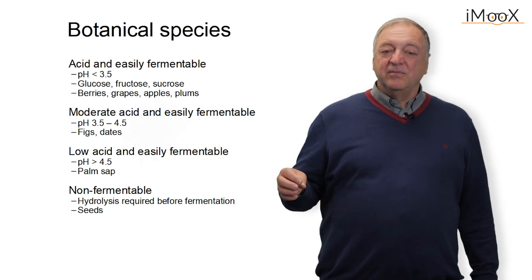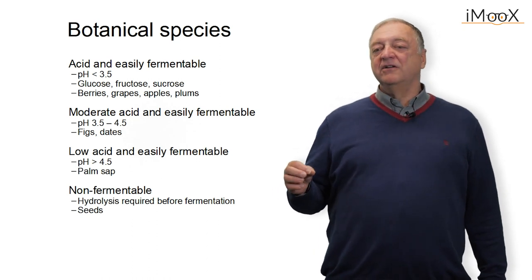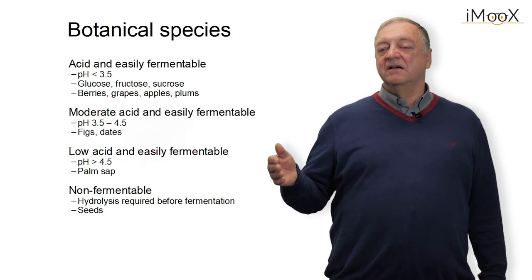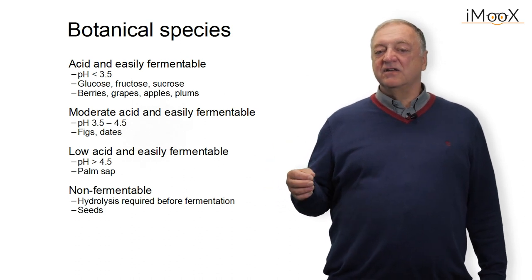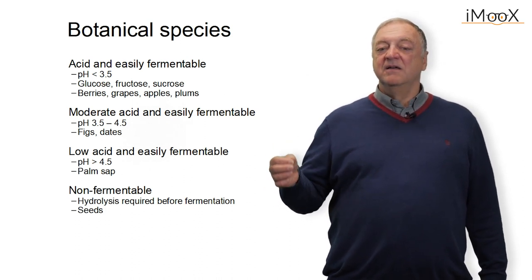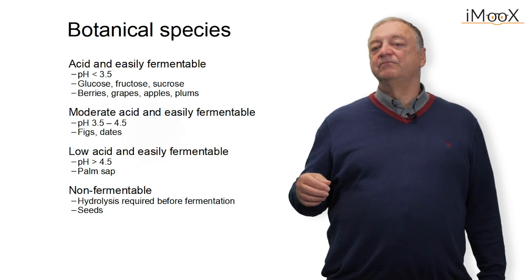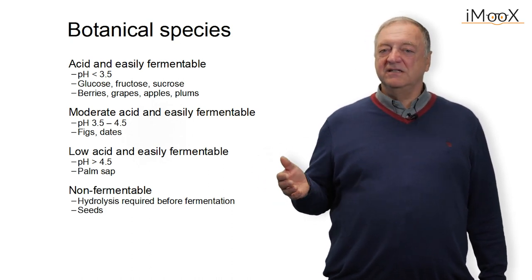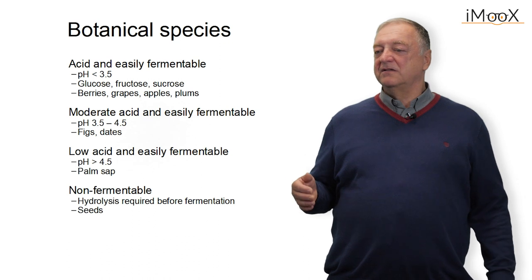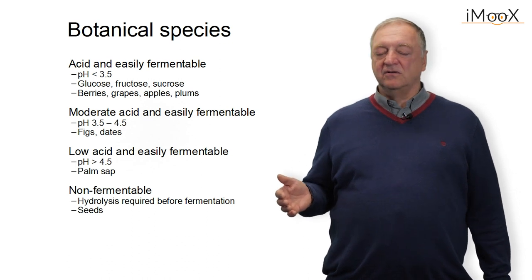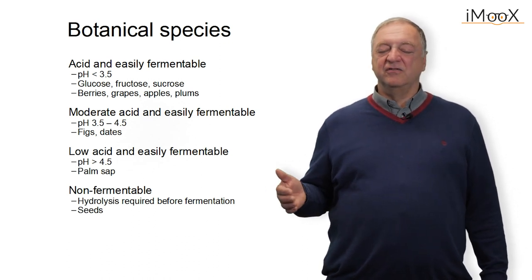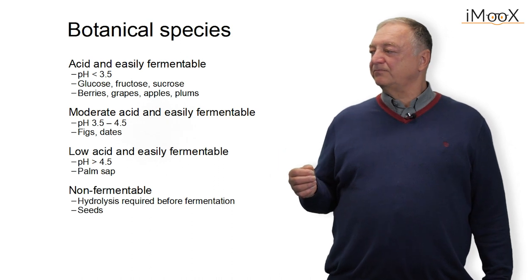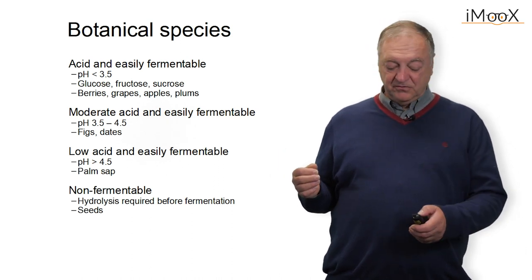The non-fermentable raw materials — as discussed earlier for beer — require the starch to be hydrolyzed before fermentation. Any cereals or seeds can be used, such as maize or potatoes; from any of these starches, acetic acid can be produced.